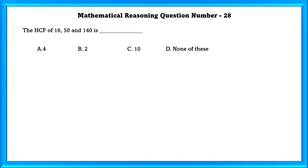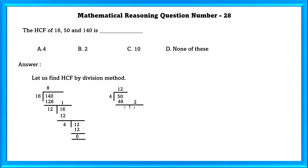Mathematical reasoning question number 28. The HCF of 1650 and 140 is? Let's find the HCF by the division method. We can see that the HCF is 2.